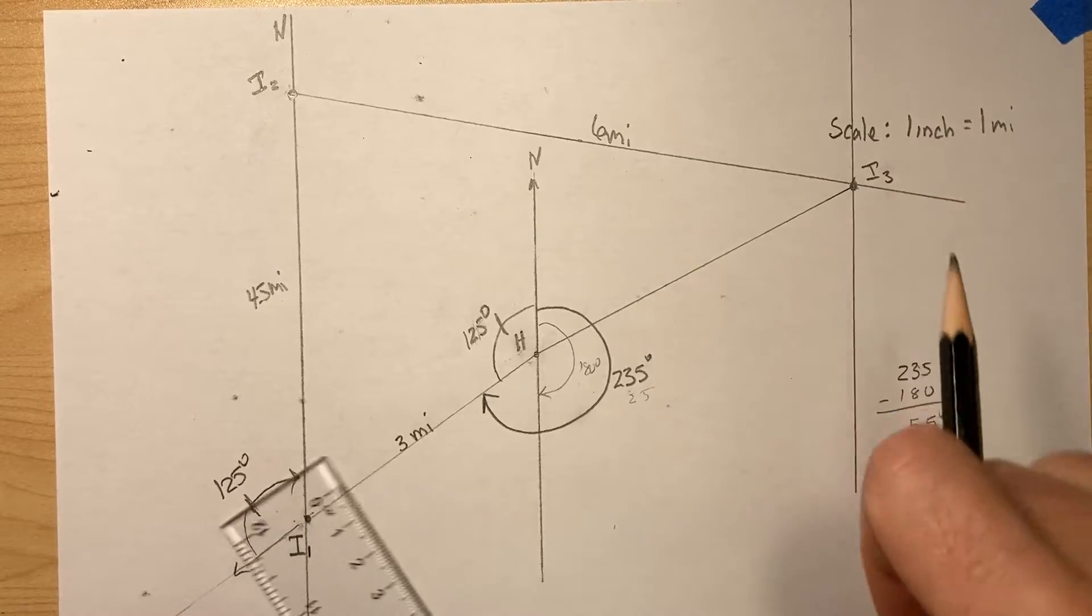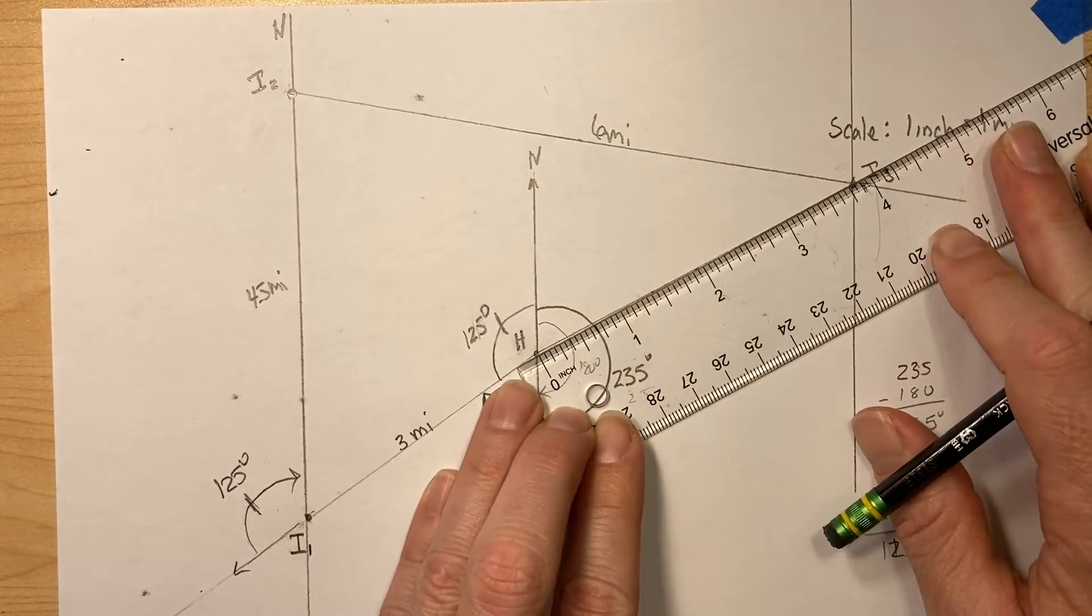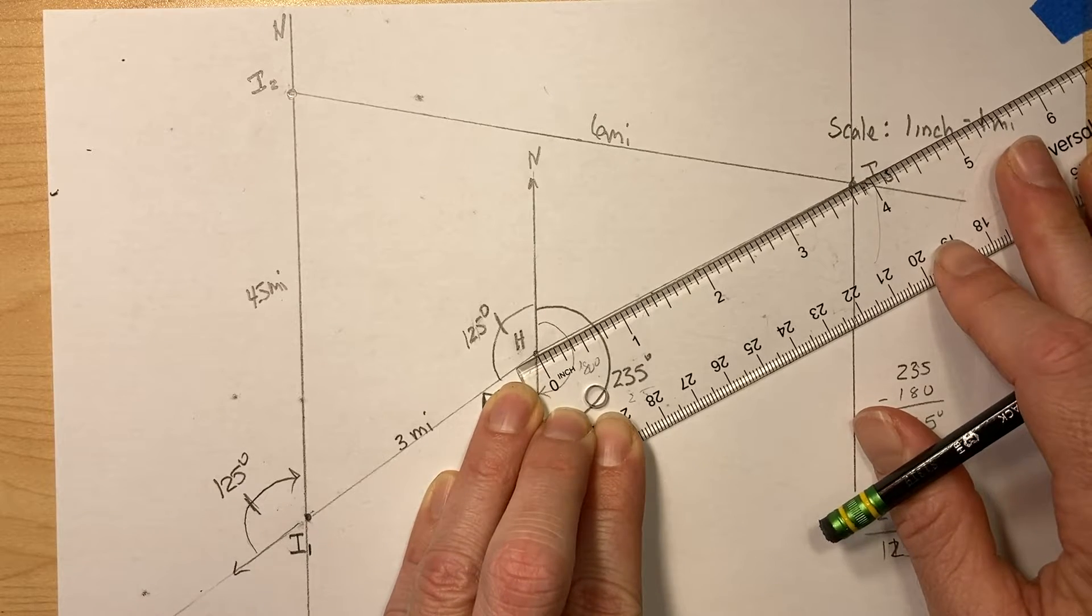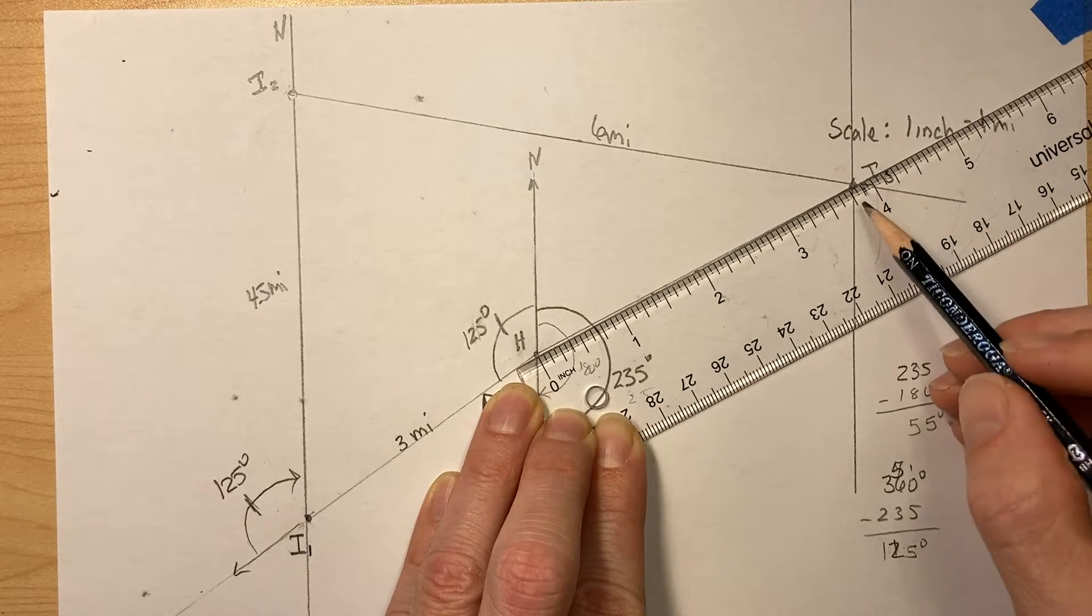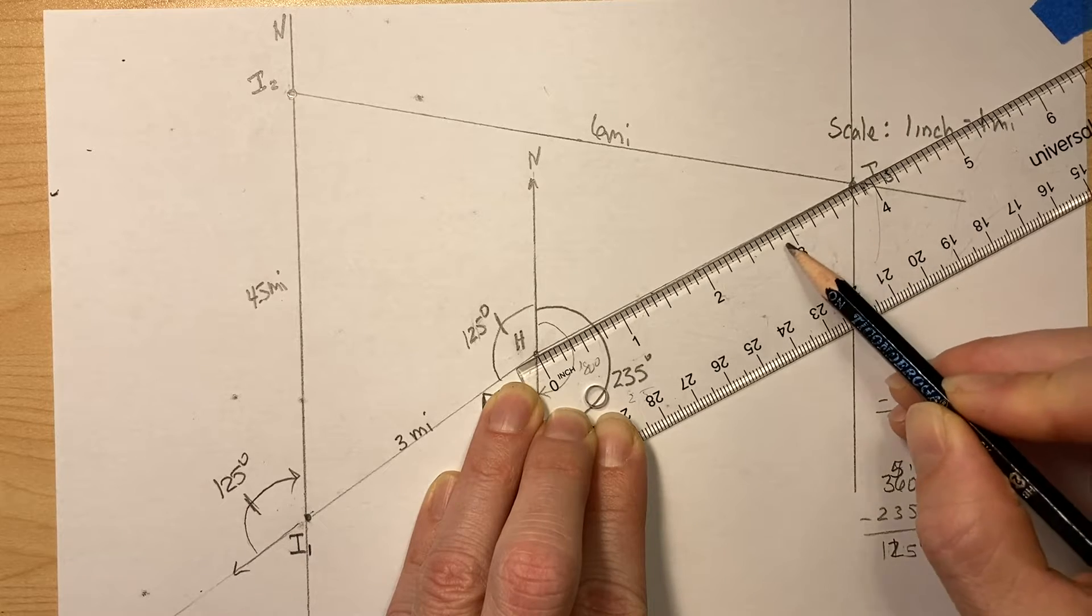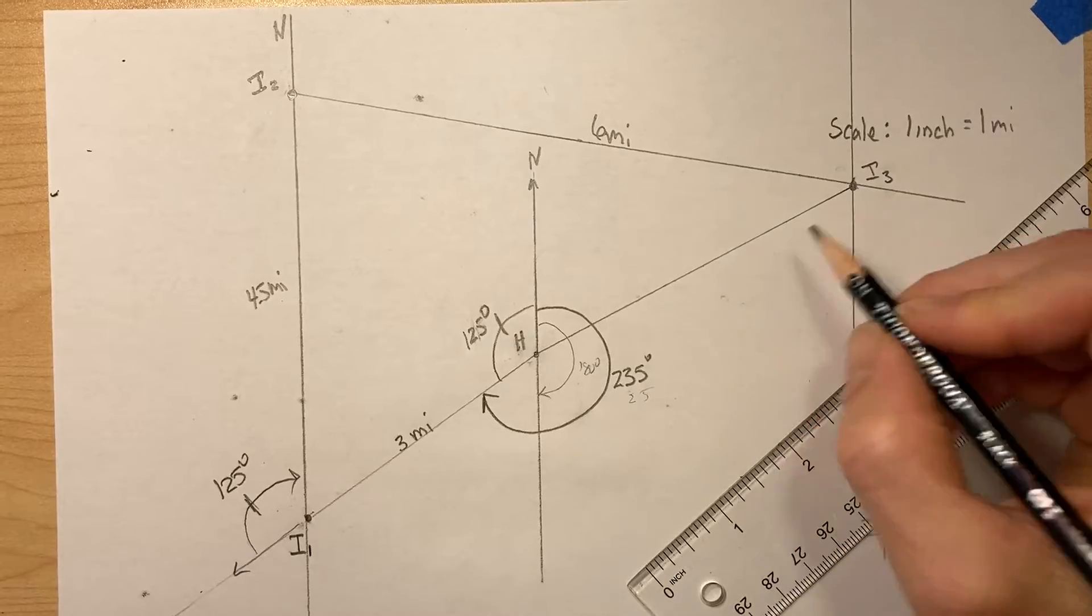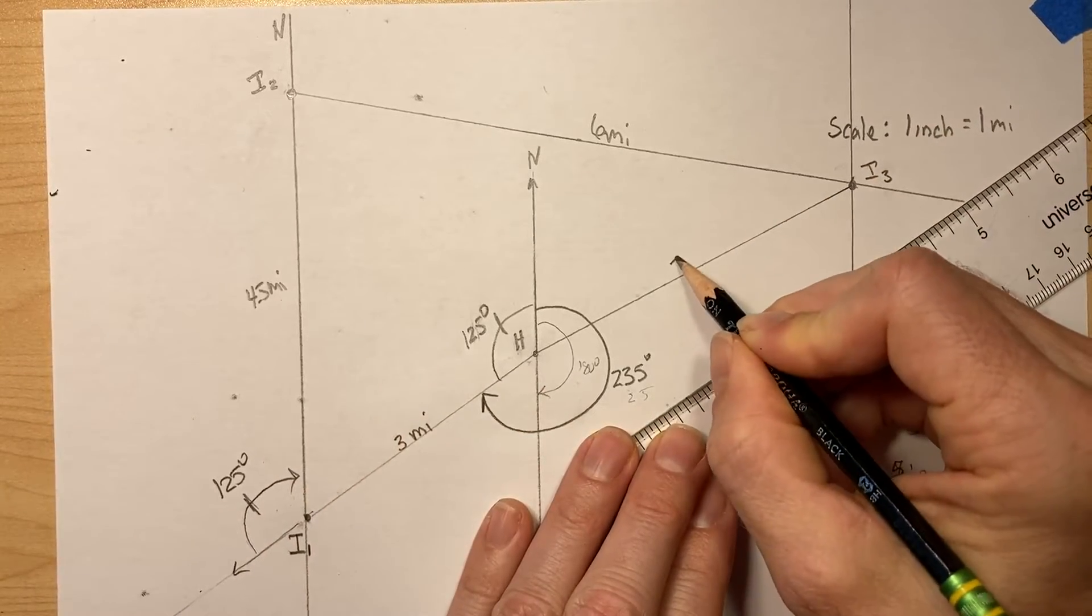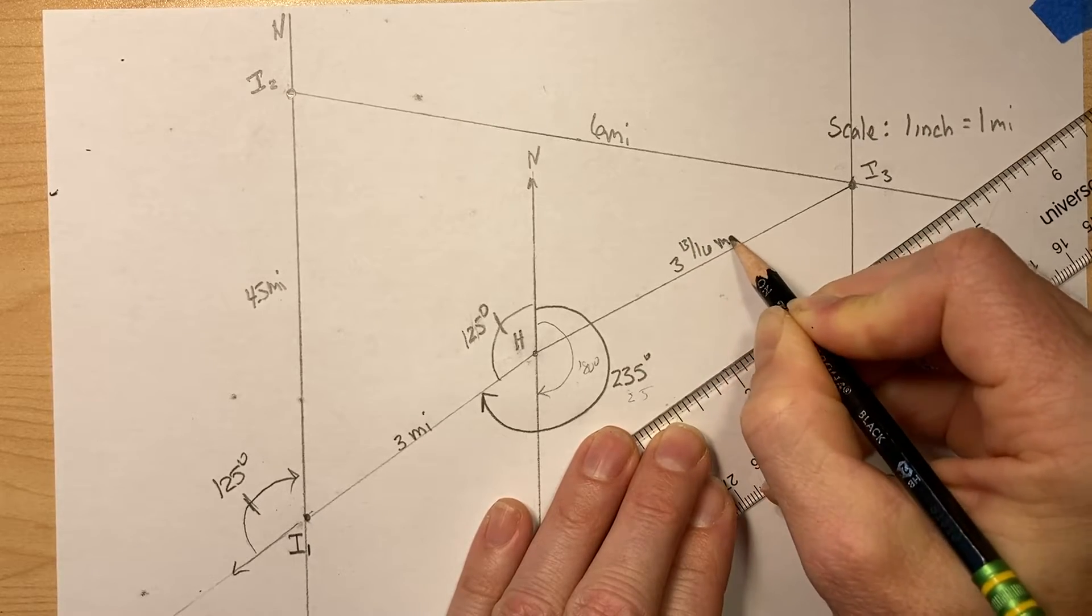Okay, so let's get the distance first. Distance is three, just a little bit past three and three quarters. Like three... So this is in sixteenths here. So halfway is eight sixteenths, nine, ten, eleven, twelve, thirteen sixteenths. Three and thirteen sixteenths. Three and thirteen sixteenths miles.